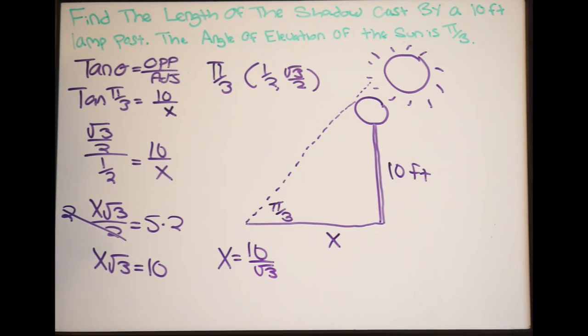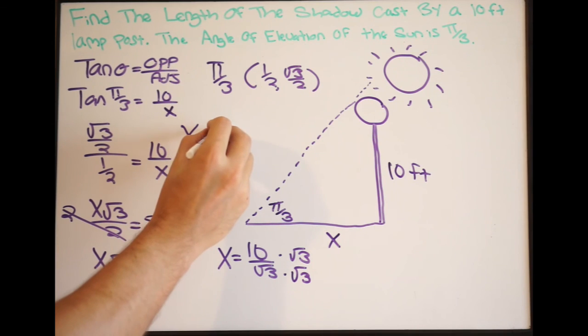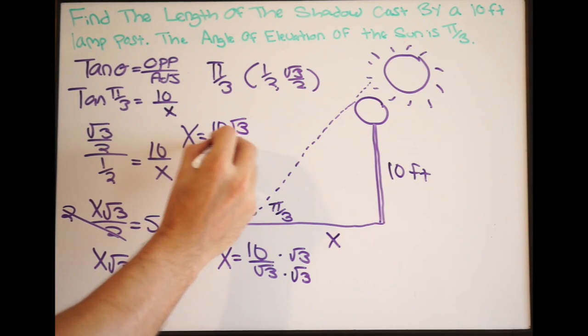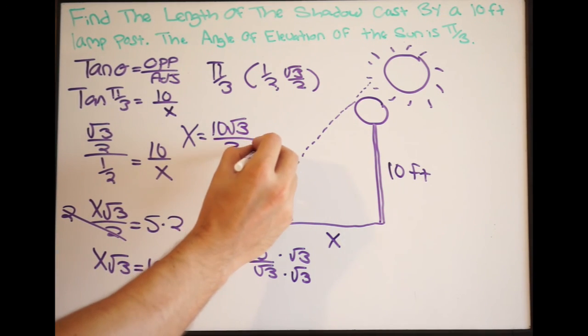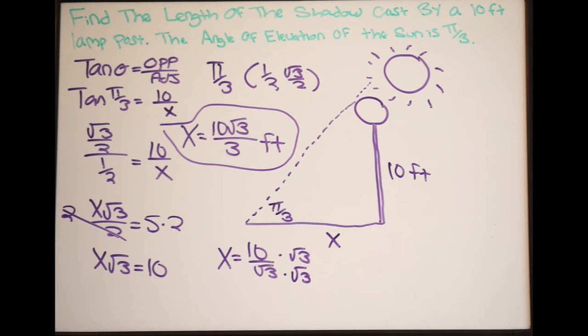Now, you're not done yet because you don't want to leave square roots in the denominator. We need to rationalize it. So this is very simple. We simply just multiply the denominator and numerator by the square root. So in this case, the square root of 3. And our final answer is going to be the following one. So we're going to get x is equal to 10 square root of 3 all over 3. And this is going to be in feet. So this here is our final answer. That's going to be the length of the shadow cast by the lamppost.